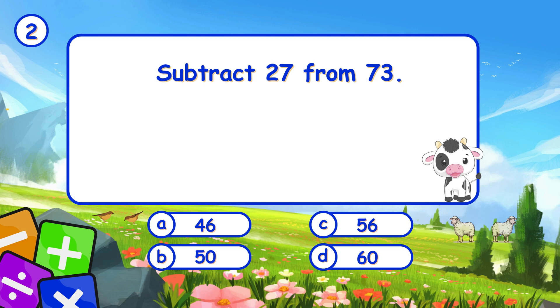Subtract 27 from 73. It's A, 46. Subtracting 27 from 73 leaves 46.